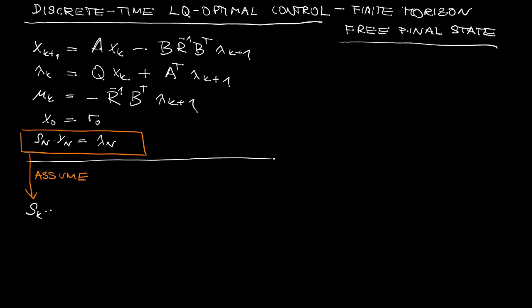Now the way we will proceed is that we will assume that the same linear relationship between the state and co-state holds throughout the control horizon, not only at the end. This is called sweep assumption and we now take it and substitute to the first two equations, to the state and co-state equation.